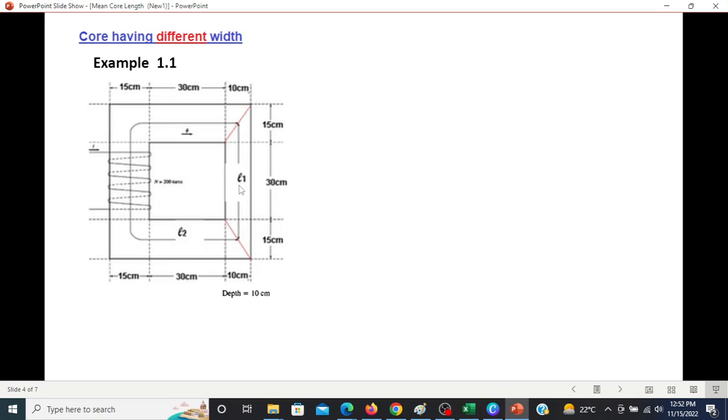So we'll calculate L1 for this length, and then we can call all these as L2. So L1 we can calculate: half of 15 cm is 7.5, then this is 30 cm, then this is 30 cm, and this one is half of 15 cm, so 7.5, total 45 cm.